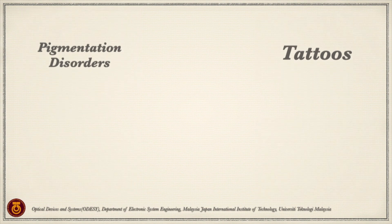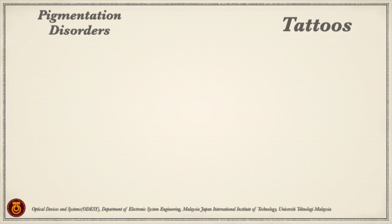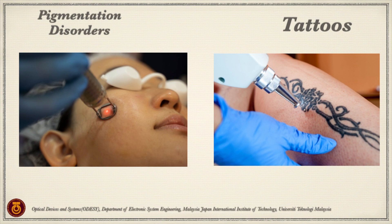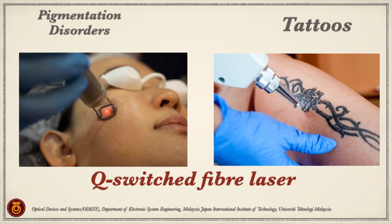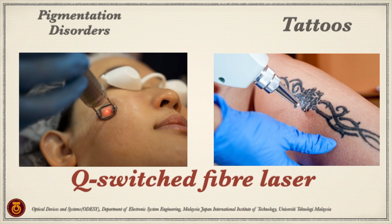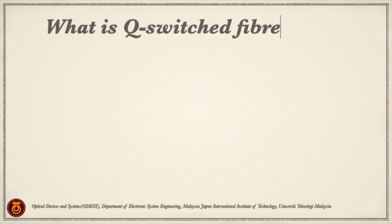In order to fade or remove pigmentation which occurs naturally or artificially, the most common method used is laser treatment. Nowadays, the commonly used laser is the Q-switch fiber laser. Hence, I would like to introduce the Q-switch fiber laser and explain why it is important.